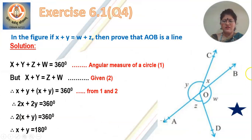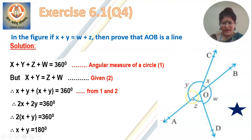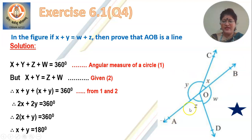Question number 4 — I have put a star here indicating it is a very important question. Students, you will write this down in your notebook. In the given figure, x plus y equals w plus z, then you have to prove that AOB is a line. So, it is given that x plus y is equal to z plus w, and you have to prove AOB is a line. In order to prove AOB is a line, what you need to prove is x plus y equal to 180 degrees. You could also prove w plus z equal to 180 degrees, and when you prove adjacent angles are supplementary, then AOB becomes a line.